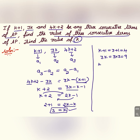The third term 4k plus 2 equals 4 into 3 plus 2, which is 12 plus 2, equal to 14. Therefore the three consecutive terms of the AP are 4, 9, and 14.